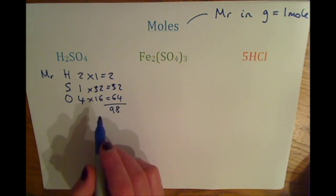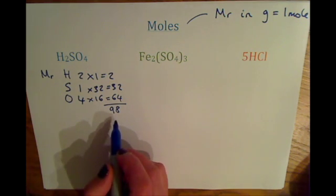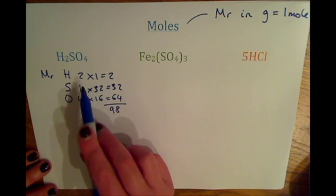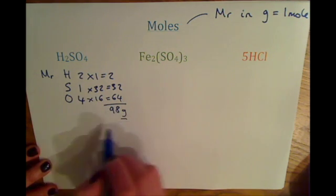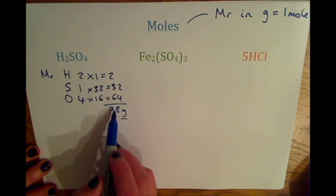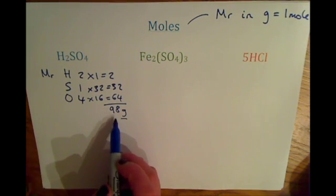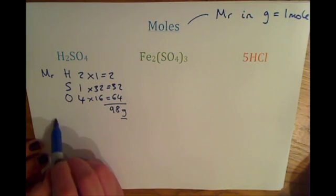I did that very quickly, so if you need to catch up on that, you can watch the video on relative formula mass. But all a mole is is the relative formula mass in grams, so just by sticking a G for grams on the end, you know that one mole of H2SO4 is 98 grams.